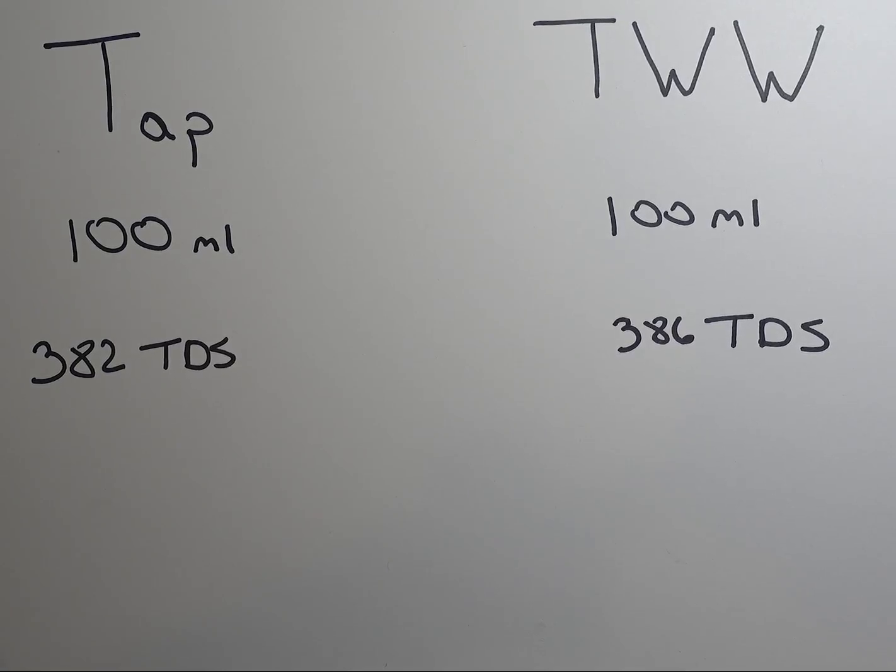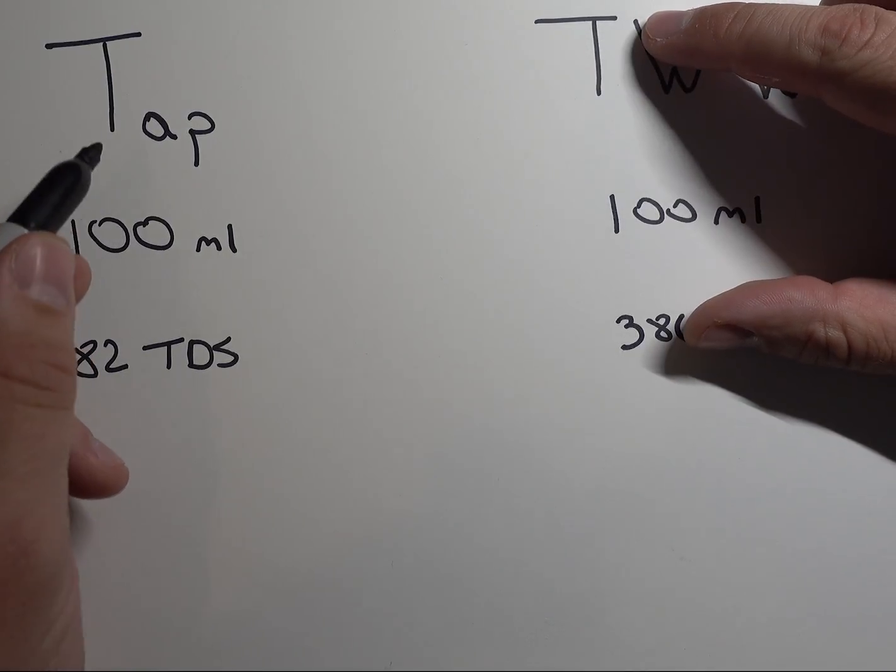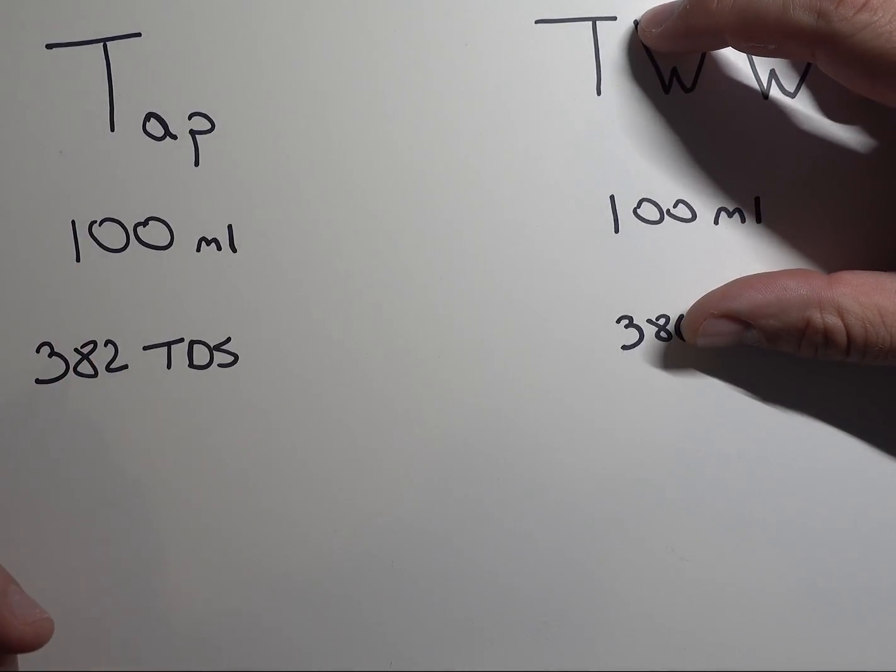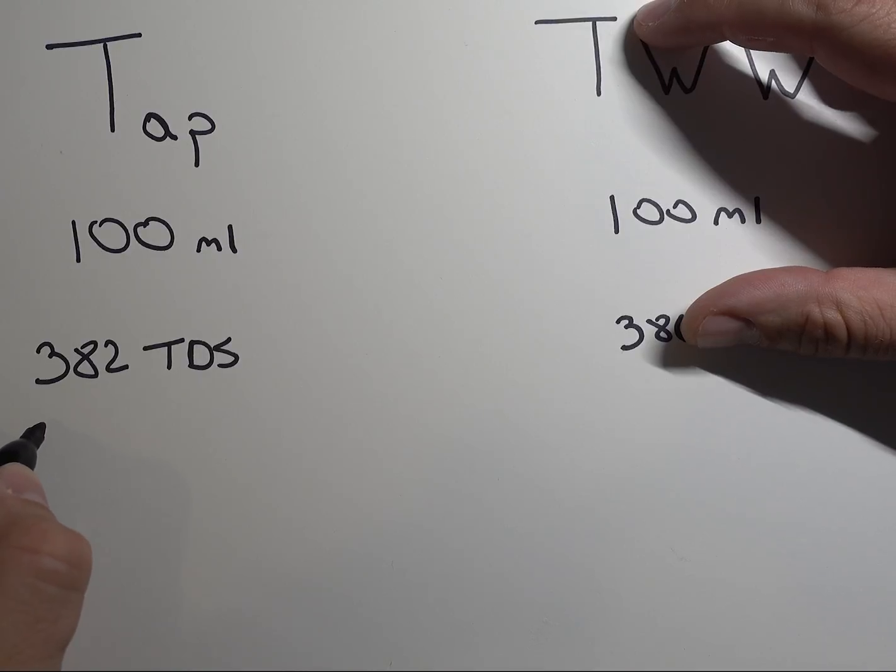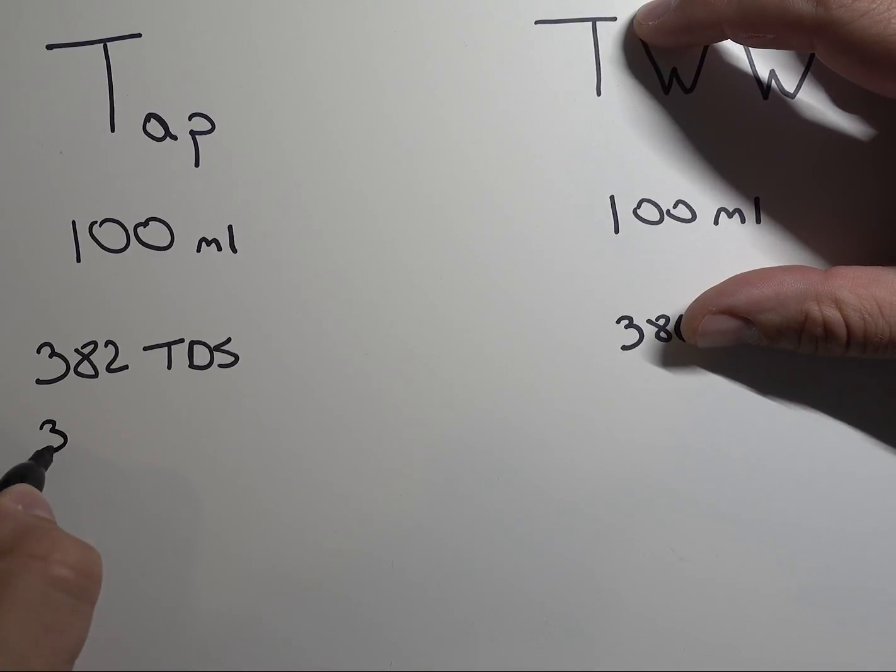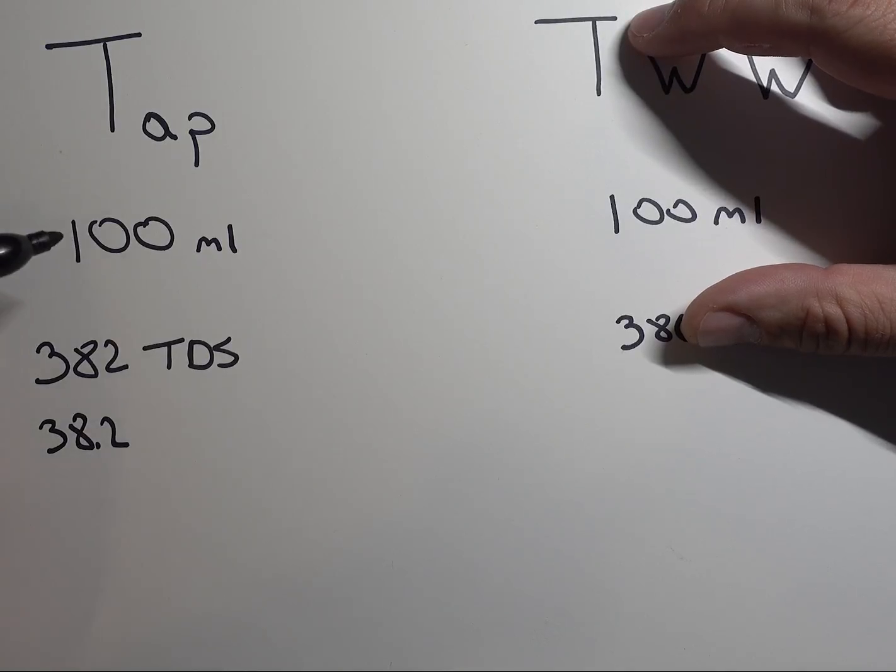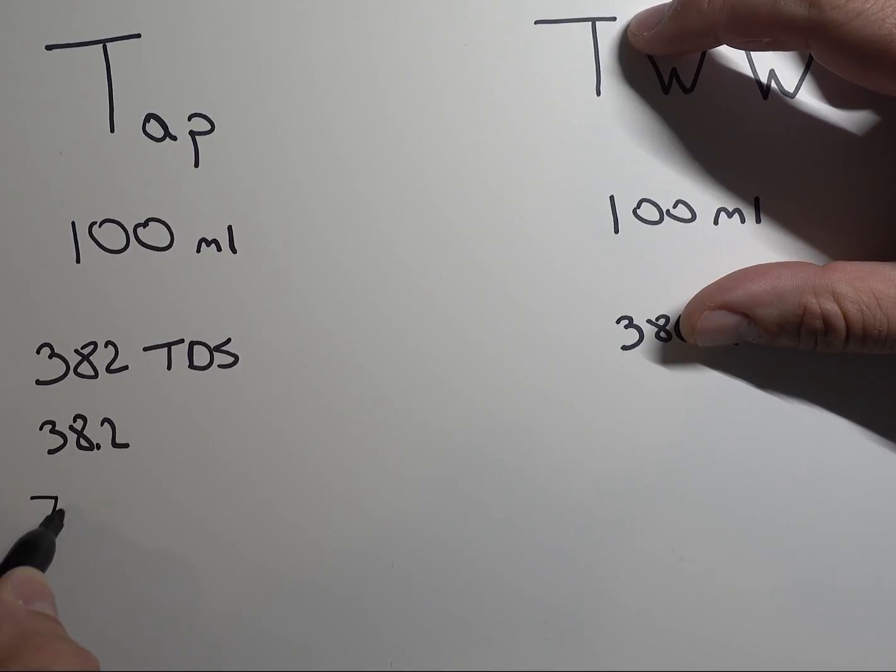Okay, if we look at the results here, both of them we started off at 100 milliliters. The tap water had a TDS of 382, which ends up being 38.2 total weight in milligrams of minerals other than water. When we heated it up and boiled it off, we boiled off about 25 milliliters, so we had left 75 milliliters.